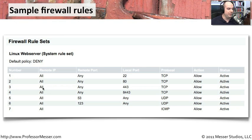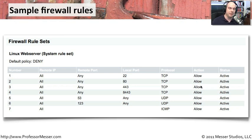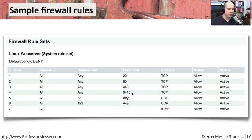Rule number three is: any remote IP, any remote port, over port 443 TCP — allow it. Port 443 is HTTPS. You'd step through the list confirming everything is as intended. The next rule allows all IPs from any port to local port 8443 over TCP. Port 8443 is not a well-known port — it's used to open access to the management interface of the web server. So if you don't want people managing your web server via that front-end, you may want to deny traffic coming from any remote IP on that port. That's a good example of how you can allow or disallow traffic based on specific port numbers.